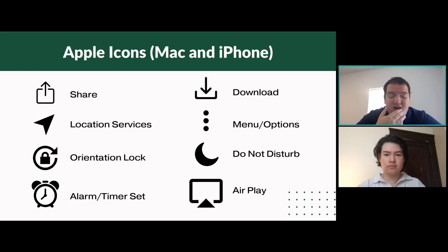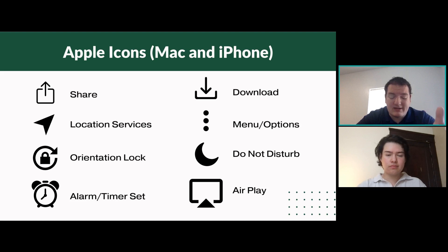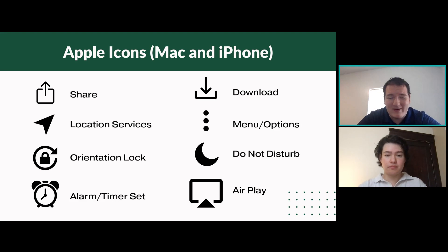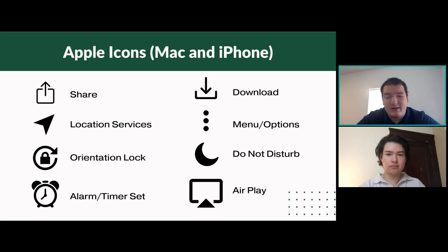The next one is the download icon — this is pretty standard across a lot of different devices. If you're looking at a file online and you want to download it, that'll be the button. On your computer it'll ask where you want to save it — like your documents folder or desktop. This next one — three vertical dots — is very universal and important. Those three dots will almost always indicate some sort of menu. If you're looking to change a setting or find more options in a website or app, tap those three dots to open up a lot more options.